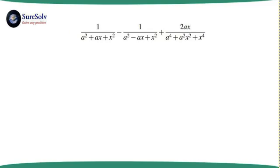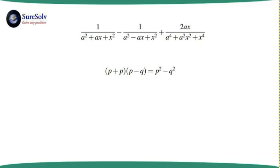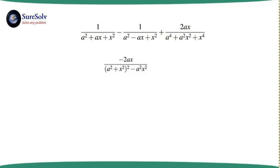We take up the first two terms together for simplification because these are simpler than the third term. When we compare the denominators of the first two terms, we find that a² + x² are common between them, along with x but of opposite sign. So we apply the formula (P + Q)(P - Q) = P² - Q² to arrive at the combined denominator as (a² + x²)² - a²x².